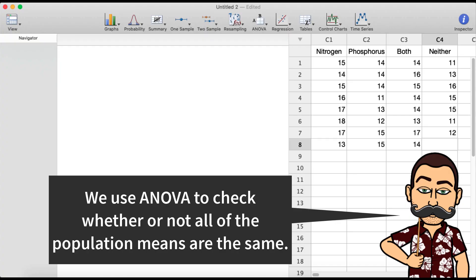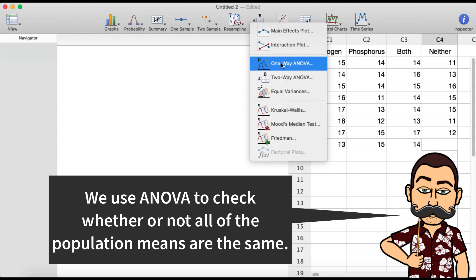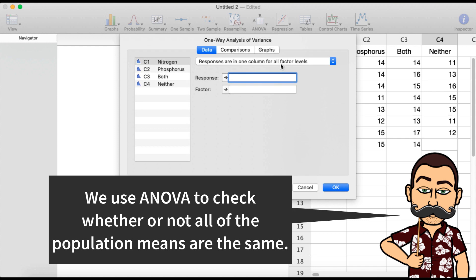So we'll start by doing this on Minitab. We go up to ANOVA, one-way ANOVA, and then responses are in a separate column for each factor and let's click in our columns.